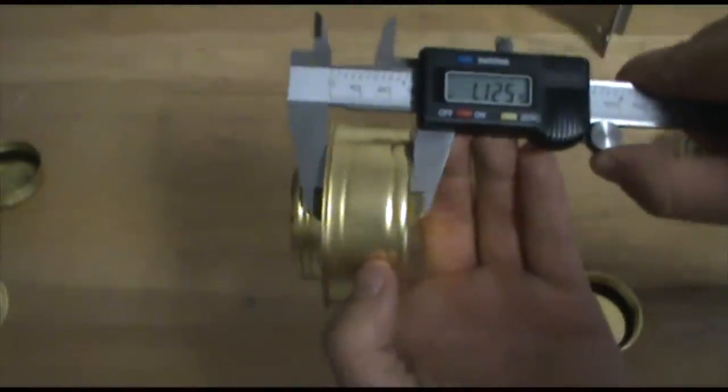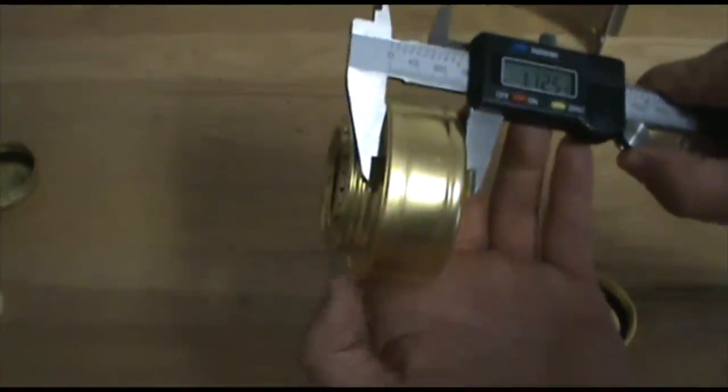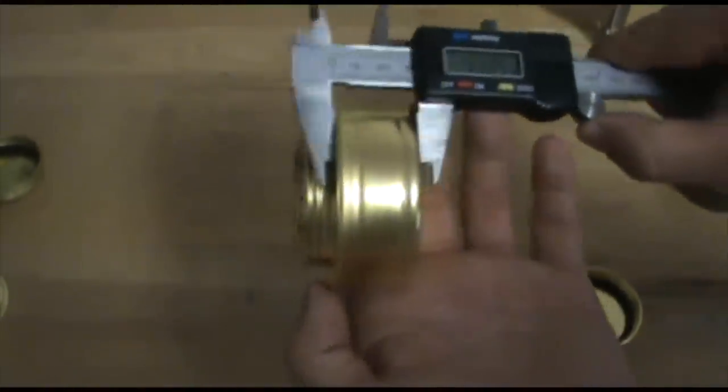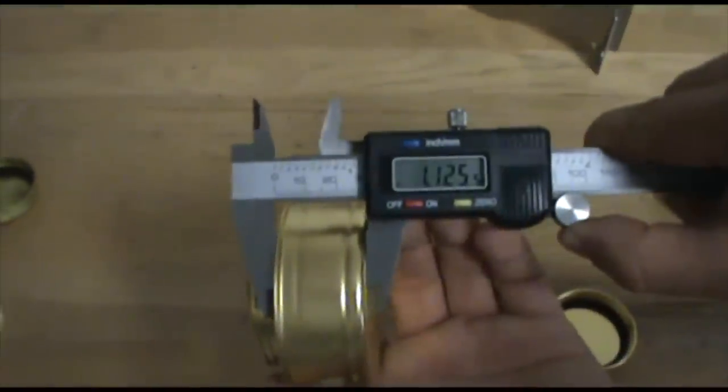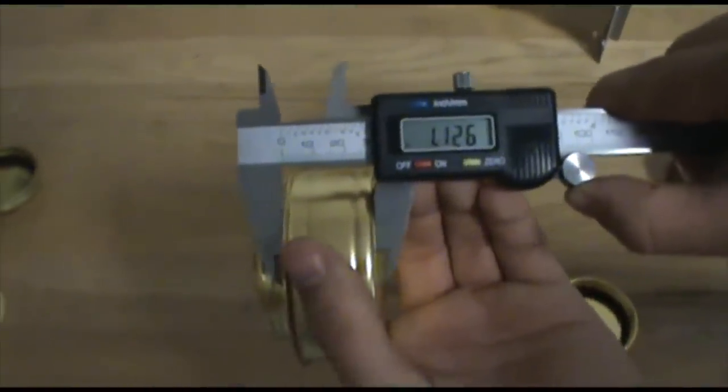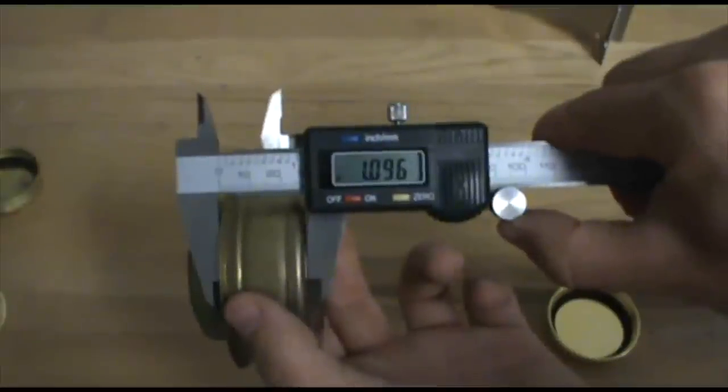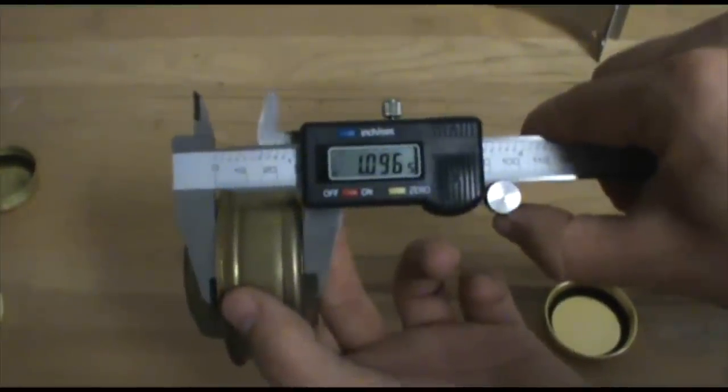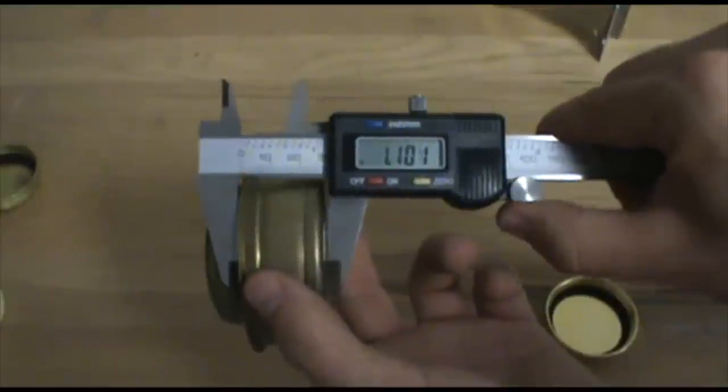The height from the base of the stove to the top of this ledge here, the Esbit, 1.125, 1.01 basically for the Trangia. So a small difference there.